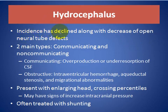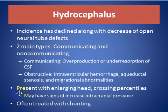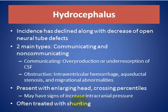Hydrocephalus incidence has declined along with a decrease in neural tube defects. There are two main types: communicating or non-communicating. Communicating hydrocephalus involves overproduction or under-resorption of CSF. Obstructive hydrocephalus causes include intraventricular hemorrhage, aqueduct stenosis, and migrational abnormalities. A patient with a large head crossing percentiles may show signs of increased intracranial pressure and is often treated with shunting.